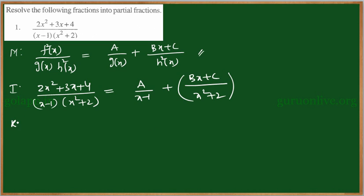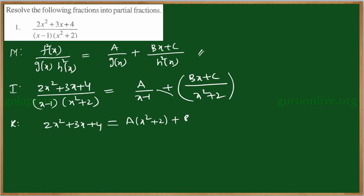Now come to the resolving part. If we take LCM on the left-hand side, the two denominators will become the same. So we can remove the denominator and write: 2x squared plus 3x plus 4 equals A times (x squared plus 2) plus (Bx plus C) times (x minus 1).